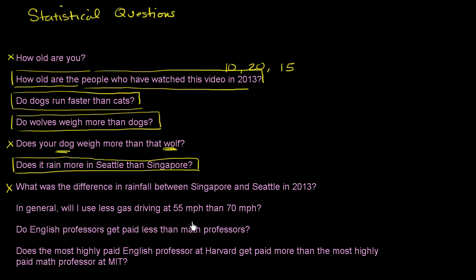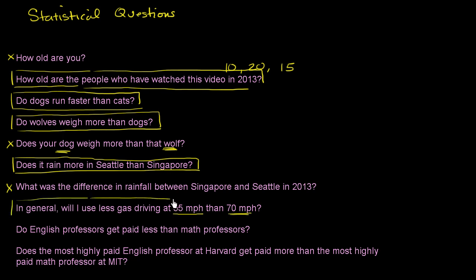In general, will I use less gas driving at 55 miles an hour than 70 miles per hour? This feels statistical because it probably depends on the circumstance — the car, how recent an oil change was, wind conditions, road conditions, exactly how you're driving. There's variation in gas mileage at both 55 and 70 miles an hour. What you'd want to do is find your average mileage at 55 and compare that to the average mileage at 70. Because of this variability, this is definitely a statistical question.